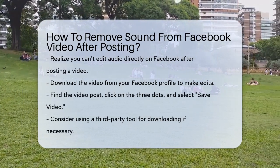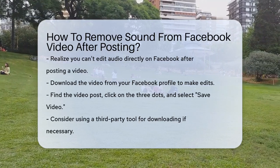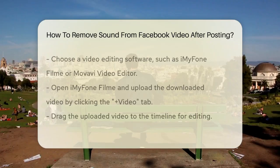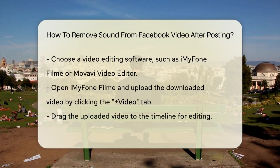To start, download the video from Facebook. You can do this by going to your Facebook profile, finding the video post, clicking on the three dots on the top right corner of the post, and selecting Save Video or using a third-party tool if needed.